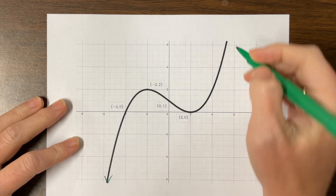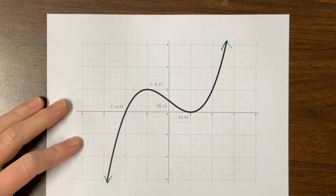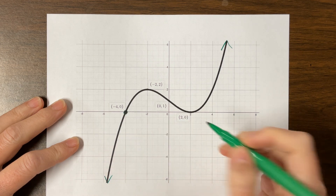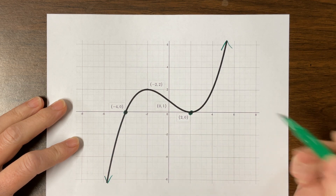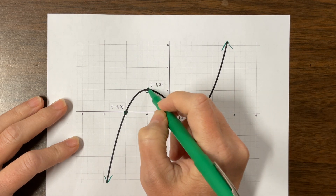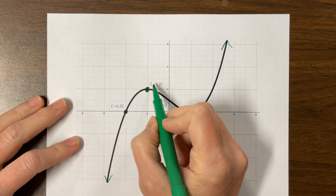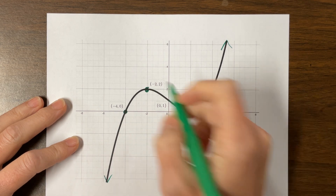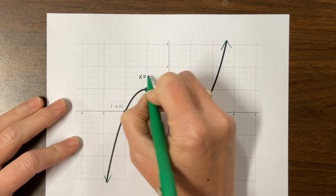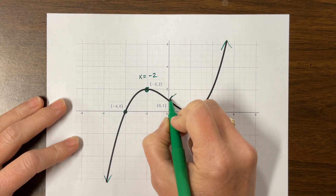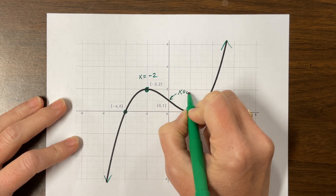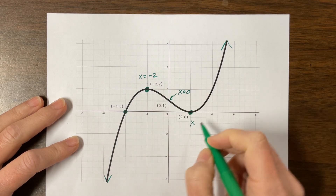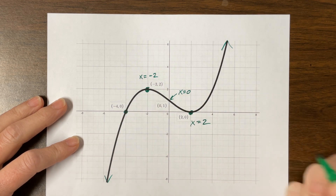So I have this graph right here. It's going from negative infinity to positive infinity. It has a zero here at negative 4, a zero here at positive 2, and it's bouncing. There's a maximum value here. This is at x equals negative 2. Here is our inflection point at x equals 0. And here we have a local minimum at x equals 2.